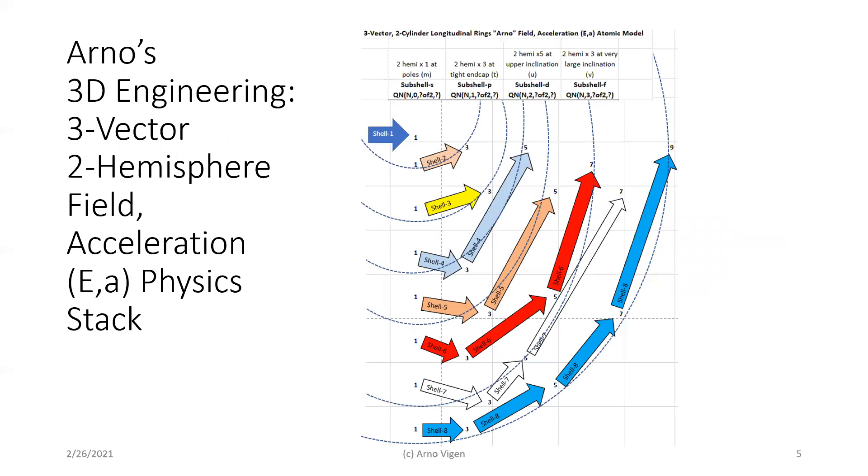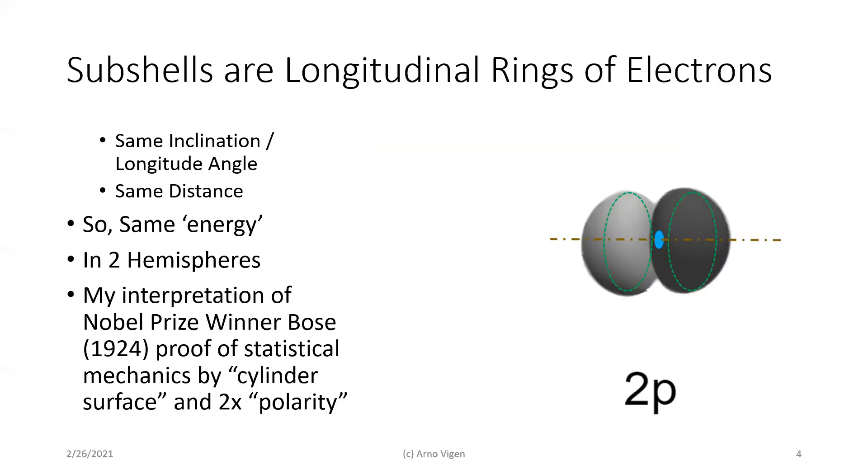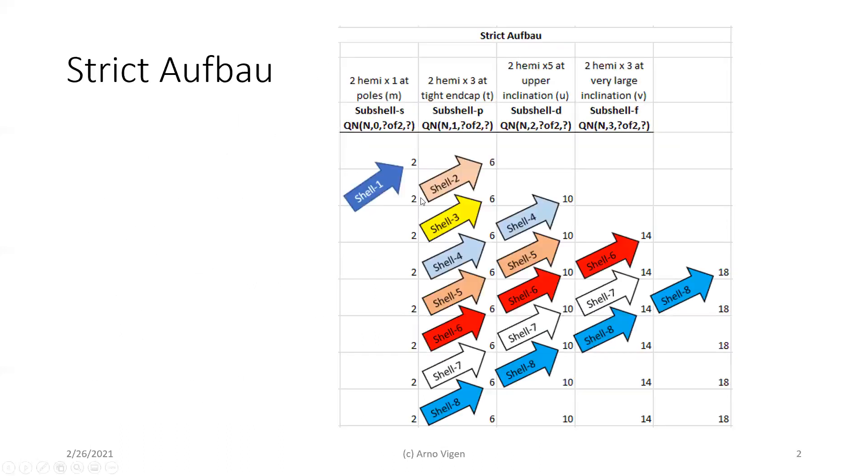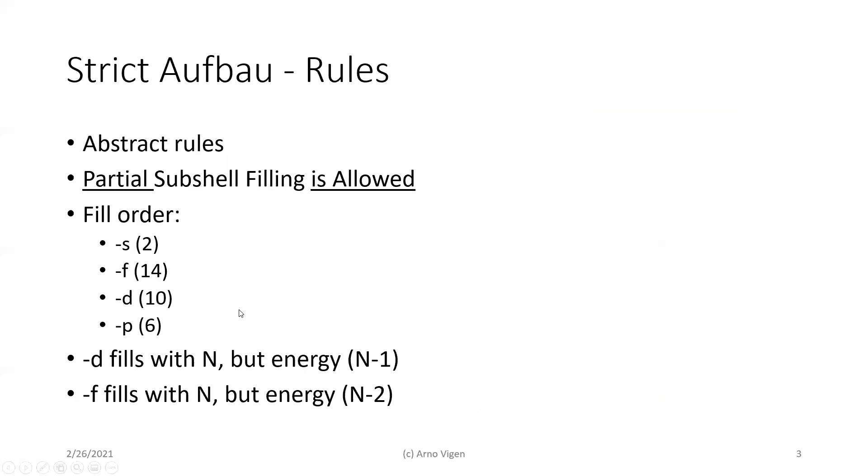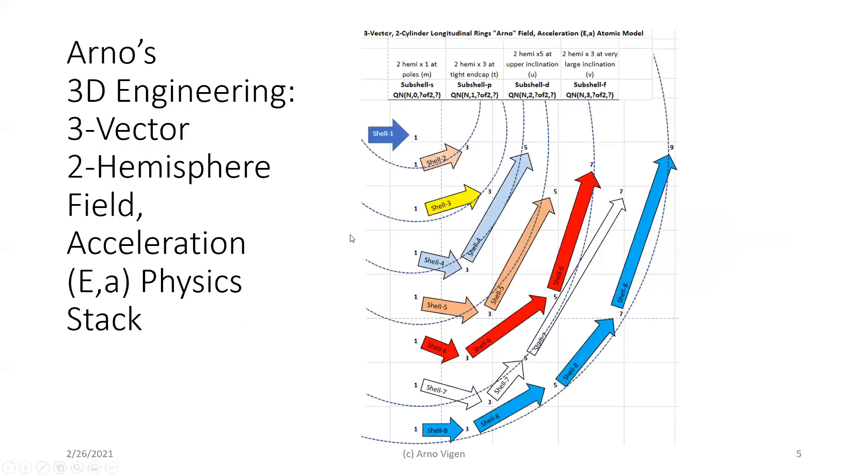That means that that very nice, beautiful graph two pages ago is not really that easy. Instead, it's in 3D. This is one hemisphere. Understand that up here, there's another hemisphere. And in this hemisphere, along the poles, that's the first place electrons want to go. You get one on each position.